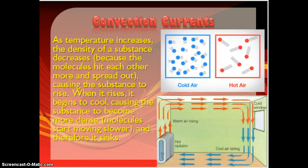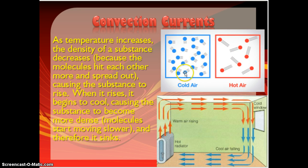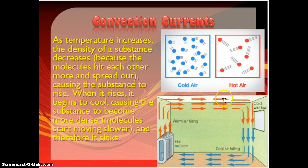In order to understand what's going on inside Earth, you really need to understand convection currents. Convection currents are based on two things: temperature and density. Temperature is really a measure of how fast molecules are moving. When temperature increases, your molecules speed up, so hot air is moving very fast compared to cold air. When molecules move fast, they bump into each other more and spread out — so hot air is not very dense compared to cold air. The colder something is, the denser it will be; the hotter it is, the less dense it will be. This causes a convection current.